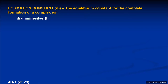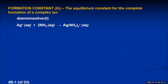An example of a complex ion is diamine silver, whose formula is Ag(NH3)2 with a positive one charge. This would be created by combining the silver ion with the two ligands to create the complex ion. That reaction would be written as: Ag+ plus two NH3 yields Ag(NH3)2+. This is a formation reaction because it forms the complex ion from the metal and the ligands.